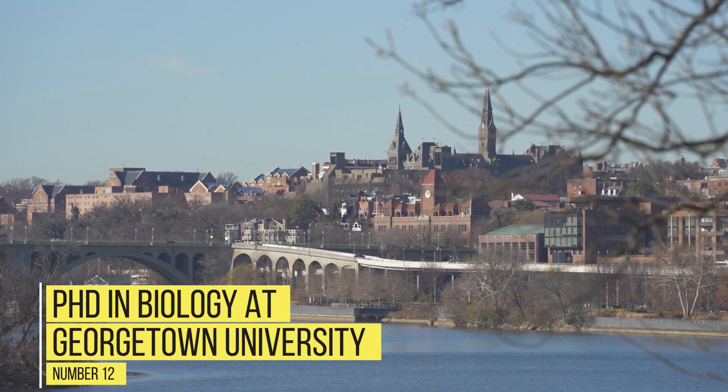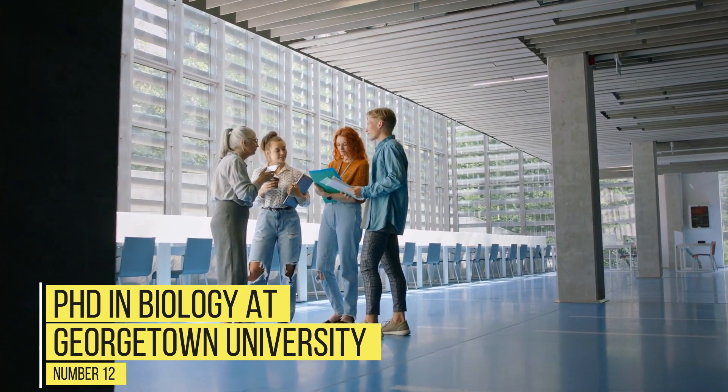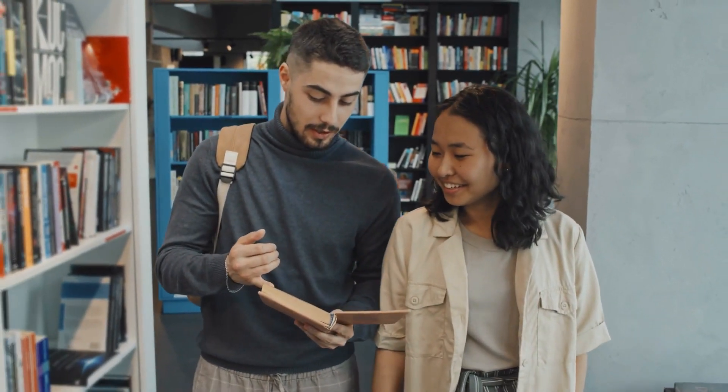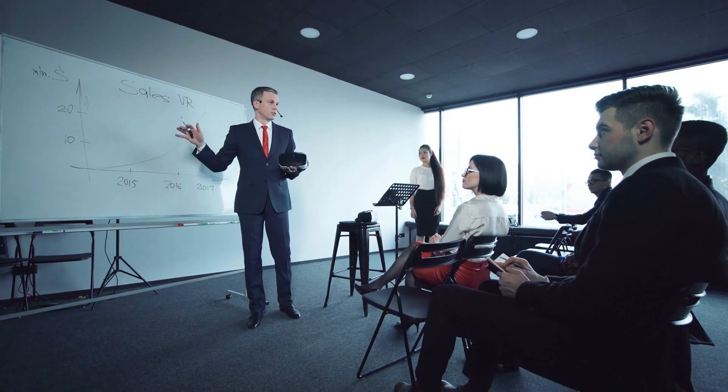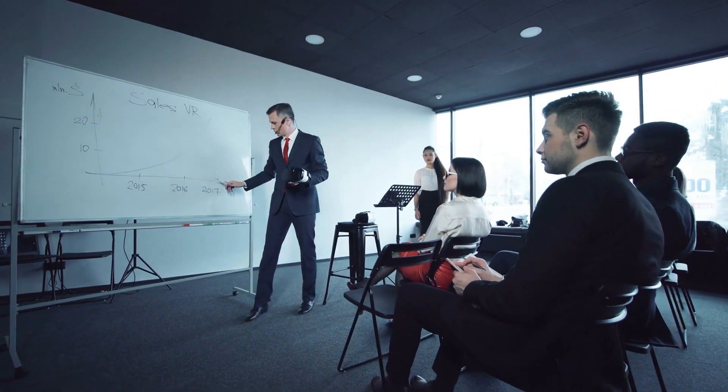Number 12: PhD in Biology at Georgetown University. The Georgetown Biology PhD program is fully funded. A stipend and tuition waiver will be provided for all five years of the program. Students in the program receive their stipends through a combination of research assistantship jobs, teaching assistantship jobs, university fellowships, and external fellowships.